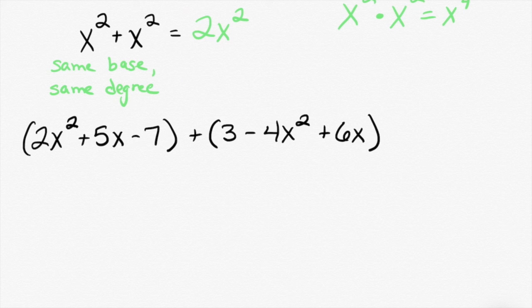So, when I'm adding these together, remember I can only add the things that have the same degree. So, look through this problem. I need the same degree and the same base. So, I'm going to start with the first thing here. Two x squared. The base is x and the degree is two. Do I have anything else in this problem that also has x squared? Yes. Yes, what is it?